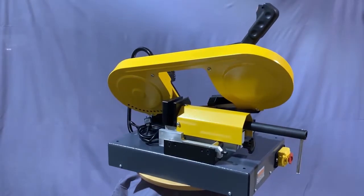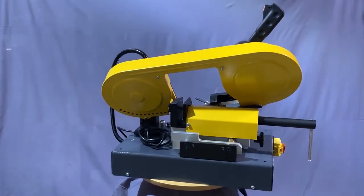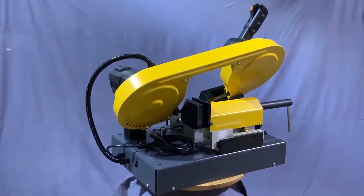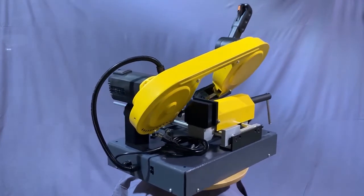But the EV91 has one more trick up its sleeve. In less than 30 seconds, you can convert it from a horizontal saw to a vertical saw.